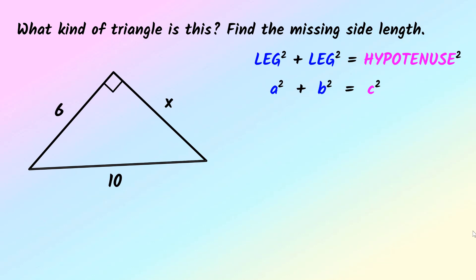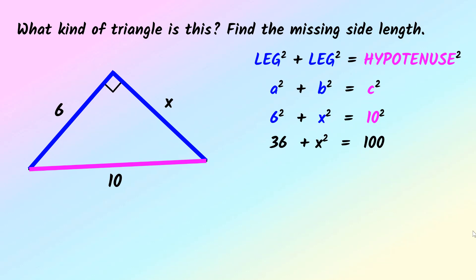Let's try another one. First identify which sides are the legs and which is the hypotenuse. Six is one of my legs, X is another leg, and ten — the side across from the right angle — is the hypotenuse. So plug it in: six squared plus X squared equals ten squared. Evaluating the squares gives 36 plus X squared equals 100. I need to get X squared by itself, so I subtract 36 on both sides. Now X squared equals 64. To get rid of the square I square root both sides, and X equals 8.